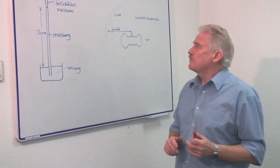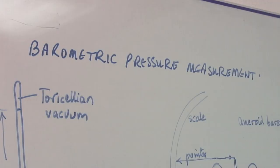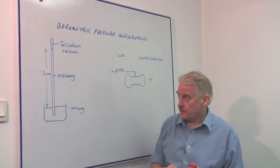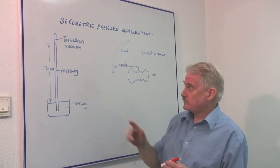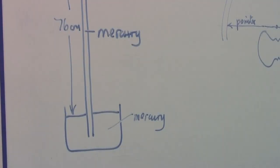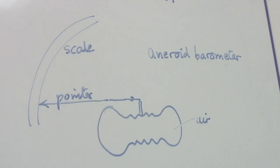Hi, I'm Steve Jones and I'm going to explain how barometric pressure is measured. Now there are two basic devices. The first is a mercury barometer and the second is an aneroid barometer.